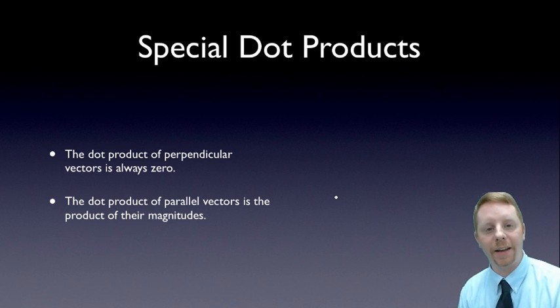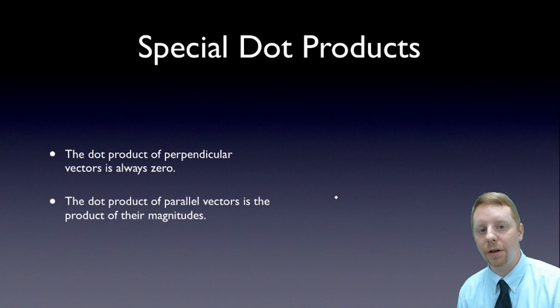Secondly, the dot product of parallel vectors is just the product of their magnitudes. A·B equals |A||B| cos θ. If they're parallel, theta is zero, cosine theta is one, so all you're left with is A·B equals |A| times |B|. So for parallel vectors, all you have to do is multiply their magnitudes.